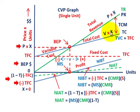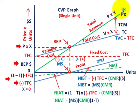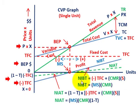Looking at our cost-volume-profit graph: units/quantity are along the x-axis, dollar amounts along the y-axis. Total fixed costs are shown flat; built on that is variable cost times quantity, giving us total cost. The revenue line is unit price times quantity. Net income before taxes equals negative total fixed cost plus CMR times sales — or equivalently, margin of safety times contribution margin ratio.